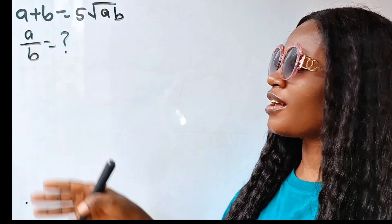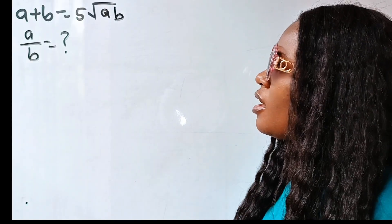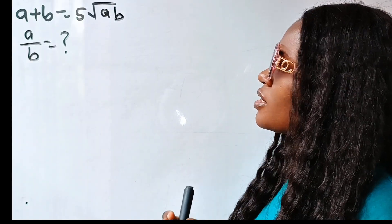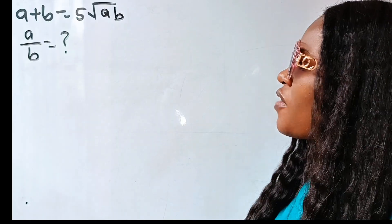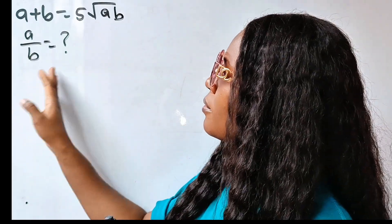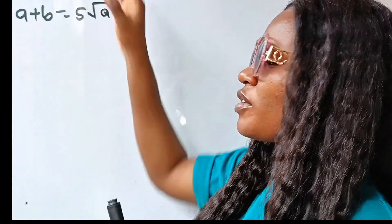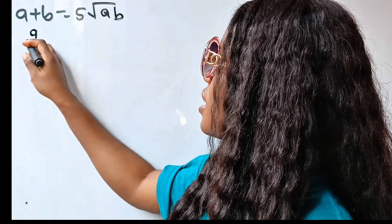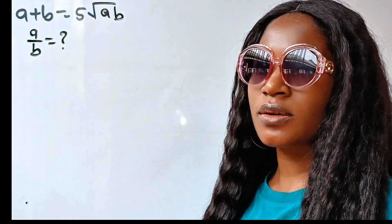We are asked to find the value of A divided by B, if A plus B is equal to 5 root AB. Let's keep the problem visible so that we know what we are looking for — A divided by B is equal to what?